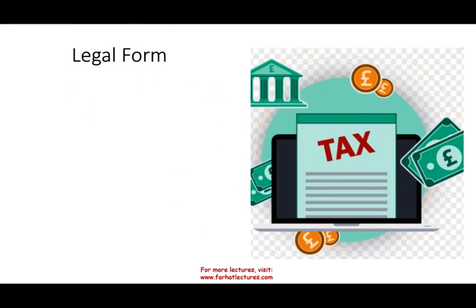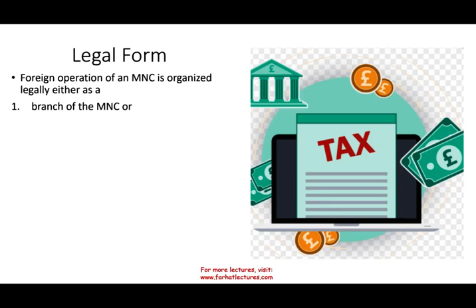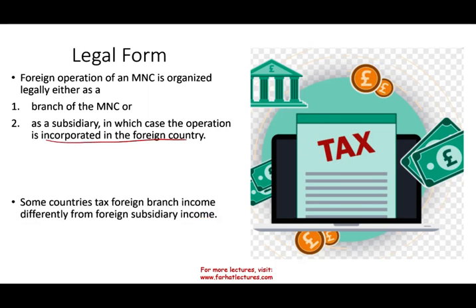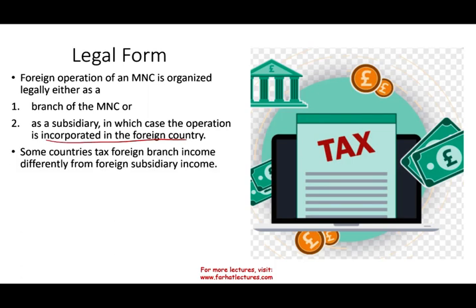The second factor is the legal form — how are you going to operate in that country? You can operate either as a branch, basically a satellite of the company, or as a subsidiary. Once you are a subsidiary, you become part of that foreign country's system. Some countries tax branches differently from subsidiaries, so you have to find out which is the most efficient or optimal way to operate in that country.